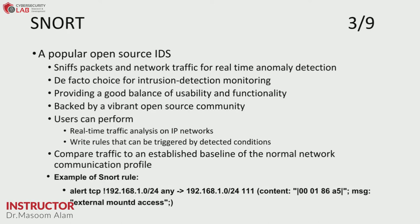For example, a Snort rule can generate an alert on TCP protocol if a host other than 192.168.1.0 communicates with any other IP on a specific port. If it also matches a specified content pattern, the log message will record an 'external mount access,' which will be noted by Snort.